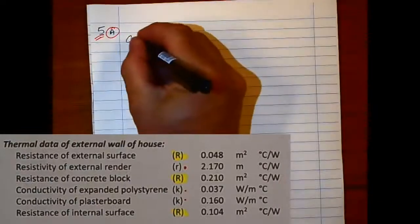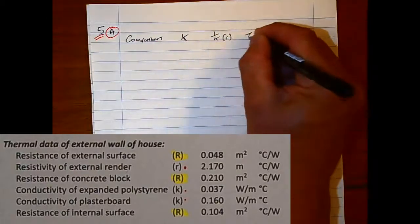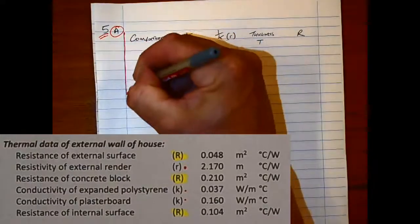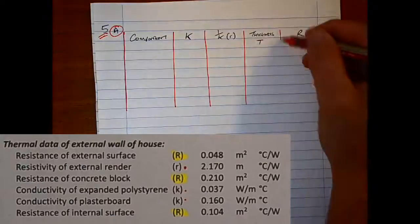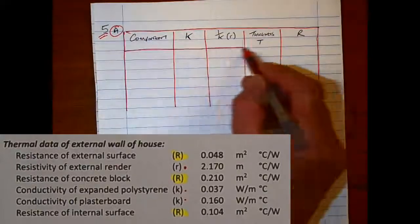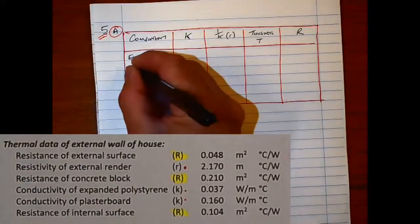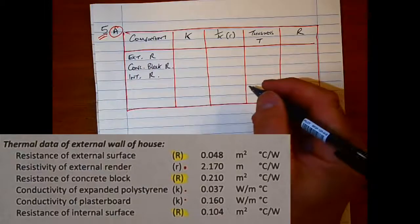To start off with the first part here, we take the thermal data, which I have highlighted, and we're going to draw the table as you normally do. So the component or the element, the conductivity, the resistivity, the thickness, and the R.